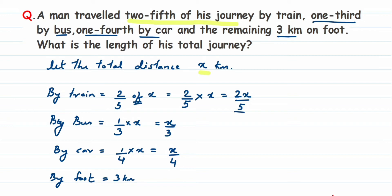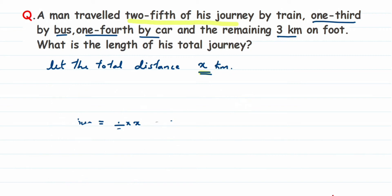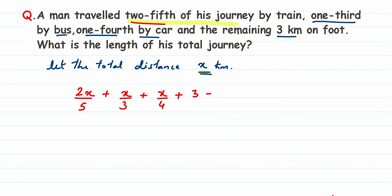If I add up all portions — 2x/5, x/3, x/4, and 3 kilometers — I get the total distance. Since we assumed the total distance is x kilometers, the equation becomes: 2x/5 + x/3 + x/4 + 3 = x. This is our linear equation.